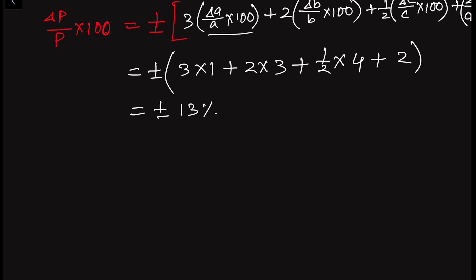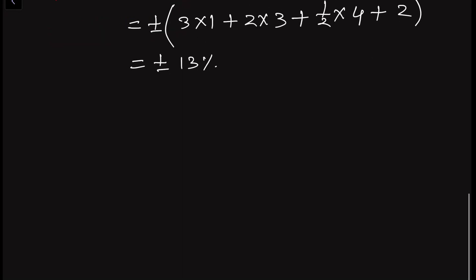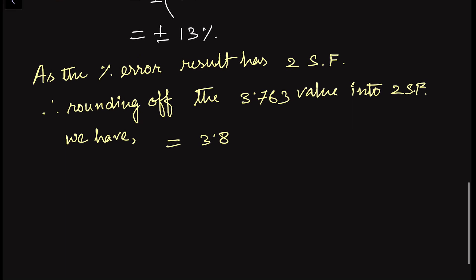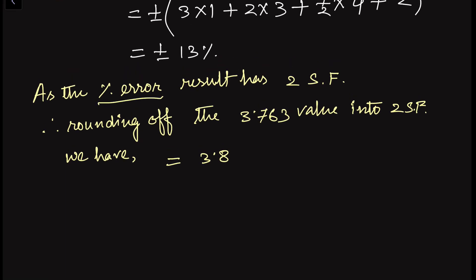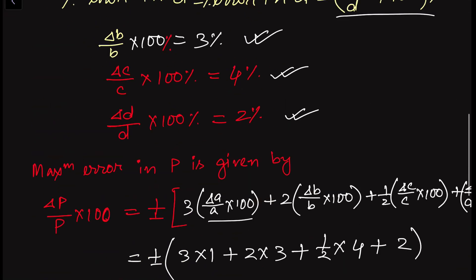So the percentage error in quantity P comes out to 3 + 6 + 2 + 2 = 13%. This percentage error has two significant figures. Therefore, we have to express the result 3.763 in two significant figures. Since the digit 6 is greater than 5, we increment the preceding digit 7 by 1, giving us 3.8.